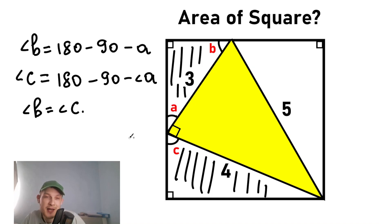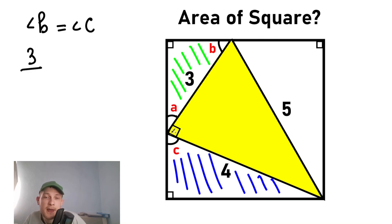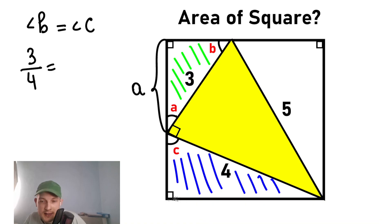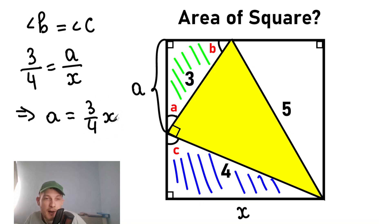Right now let's find our coefficient of similarity, and we will find our area of the square. The green triangle on the top left side is similar to the bottom blue triangle since angle B equals angle C. Let's find a proportion. We take the hypotenuse equal to 3 and divide by the hypotenuse of the blue triangle, which is 4. This equals A over X, where A is a leg of the green triangle and X is the side length of our square. So A equals (3/4)X.